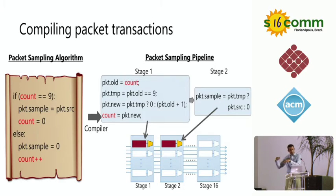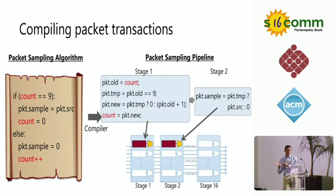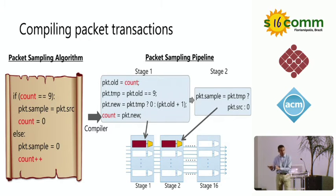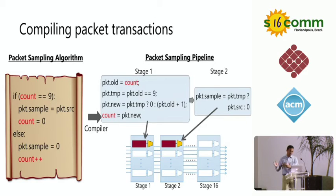When doing this mapping, it might turn out that the atom cannot support the codelet — for instance, the atom is only a counter but you want x equals x times 5. In such cases the code is rejected. This is unlike a software router where all code compiles but performance depends on complexity. Here, only some code compiles, but all compiled code runs at line rate.